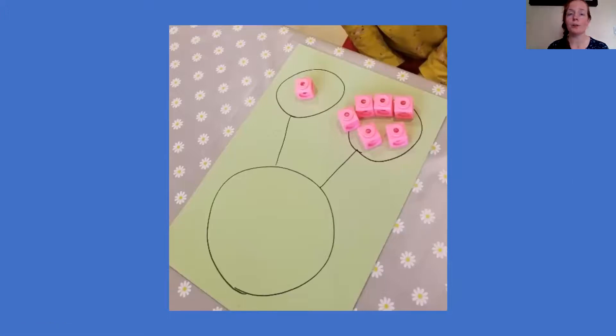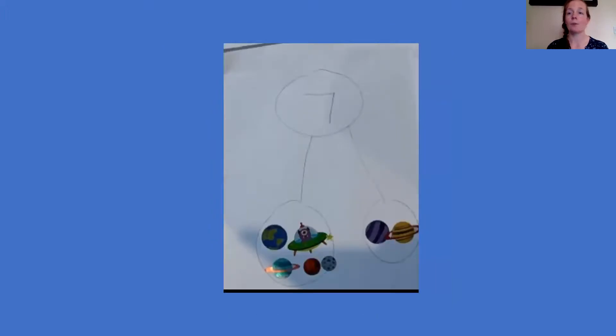And then we've got this person who's drawn the part-part-whole on a piece of paper and then they've used cubes to work it out, which is great. Now this is quite a tricky one but I quite like this idea, and if you're feeling really confident with part-part-whole you might want to try this. And so this person has used stickers.